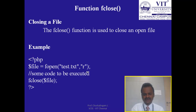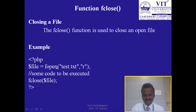The fclose function is used to close an open file. After all operations are complete, you must close the file using fclose. You open the file, perform whatever operations you want, and finally close the file using fclose.